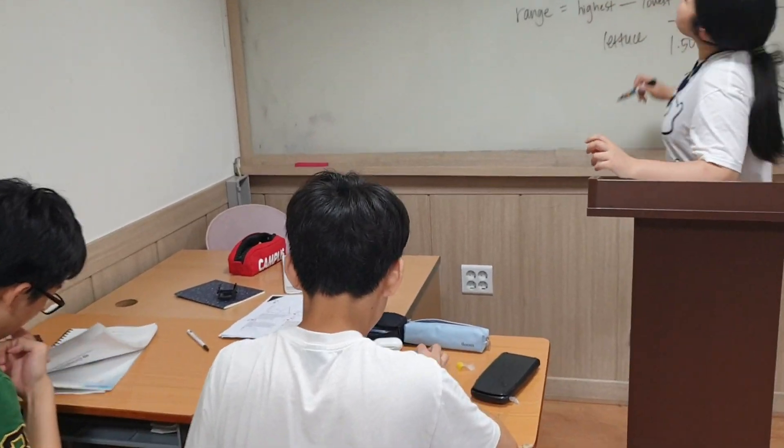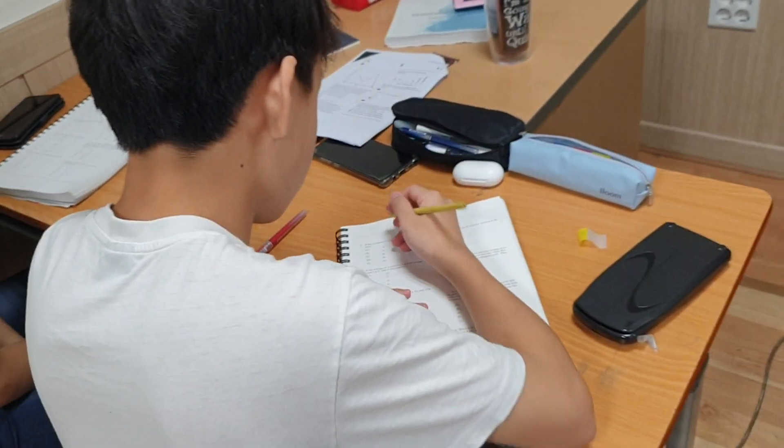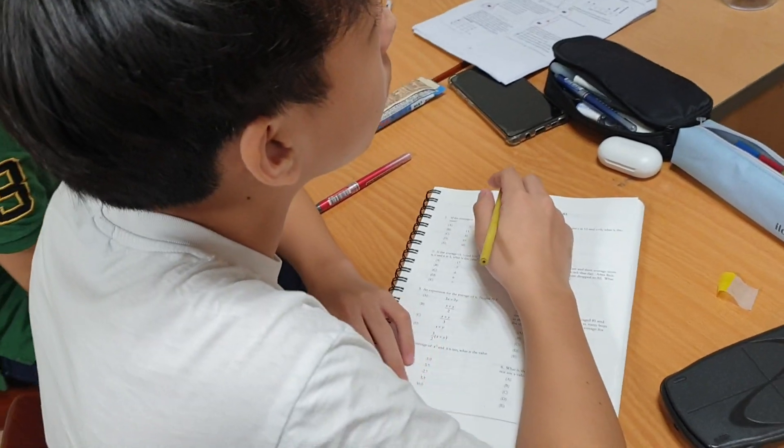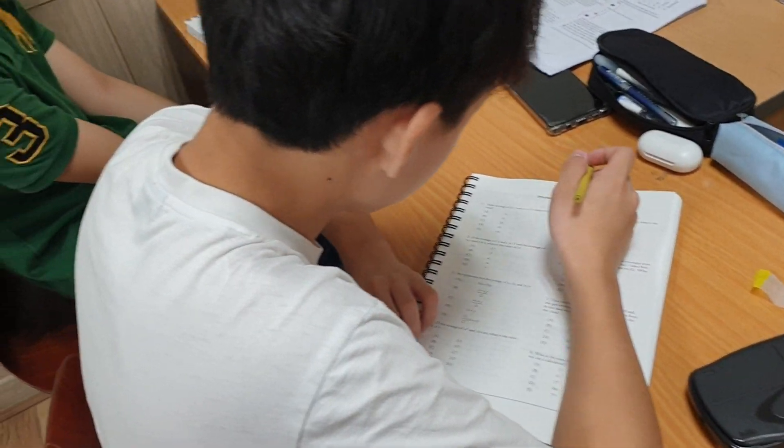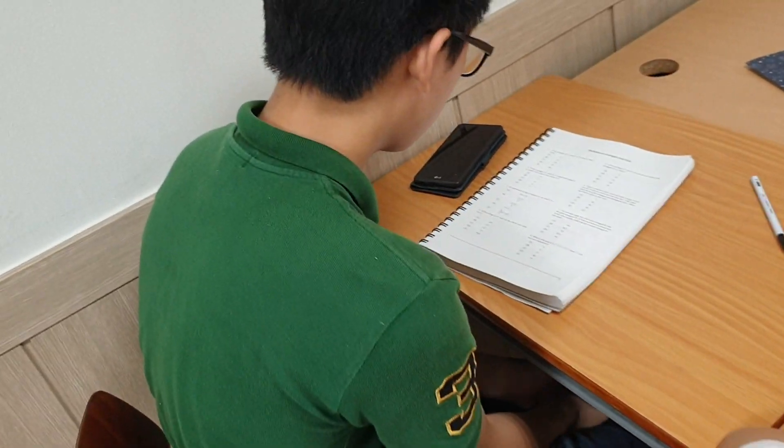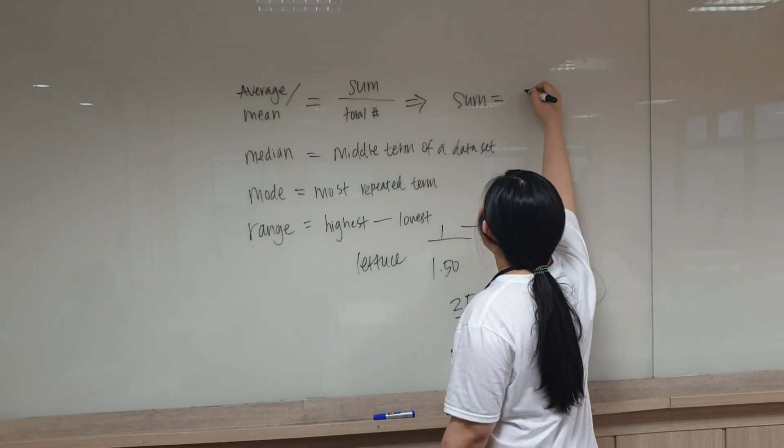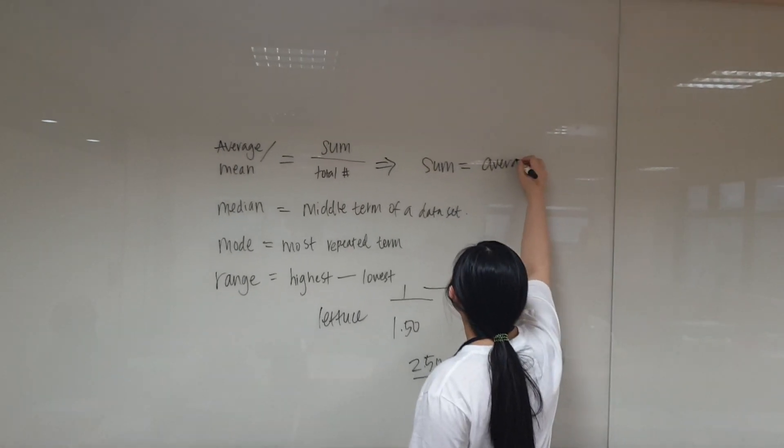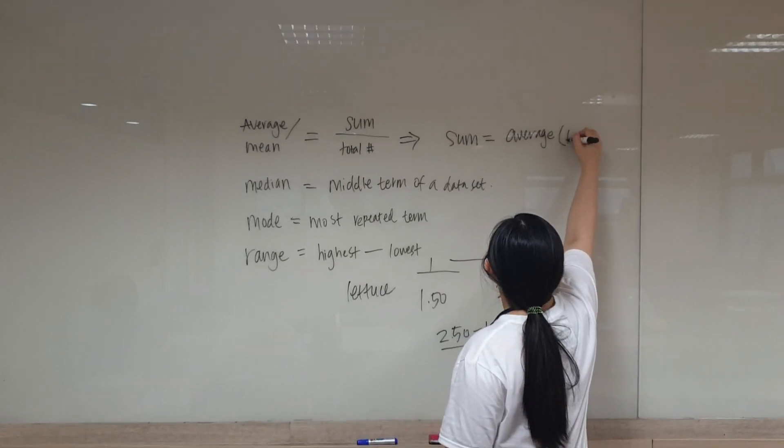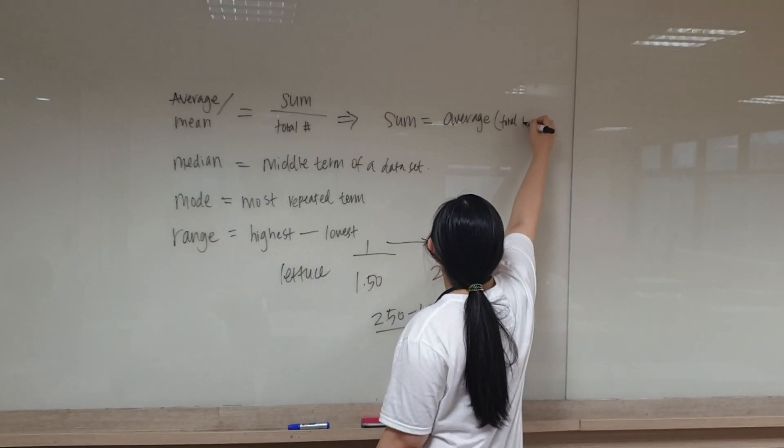Now when I tell you that the average is just the sum divided by the total number, it's easy to tell - yeah, that's obviously the equation. But what students don't recognize is that you could also say that the sum equals the average multiplied by the total number of terms that you have.